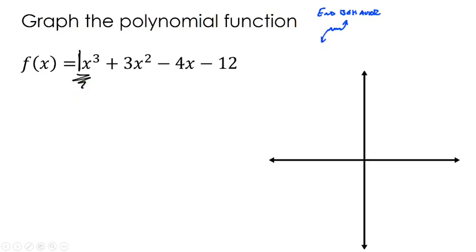Next, we need to find our zeros. This one actually does factor, but since in our previous videos we used rational root theorem, I'm going to use rational root theorem. We look at factors of 12 divided by factors of 1.